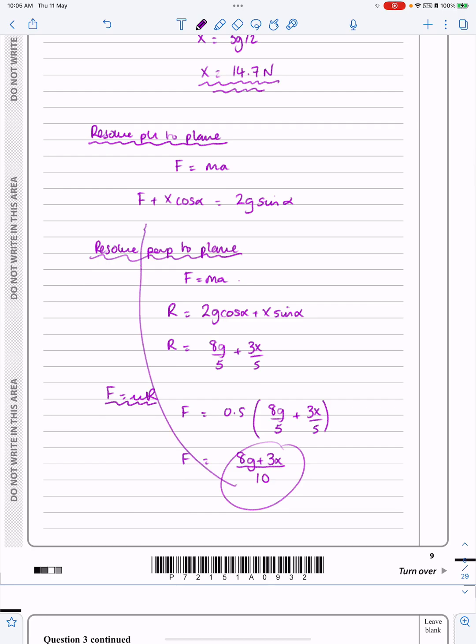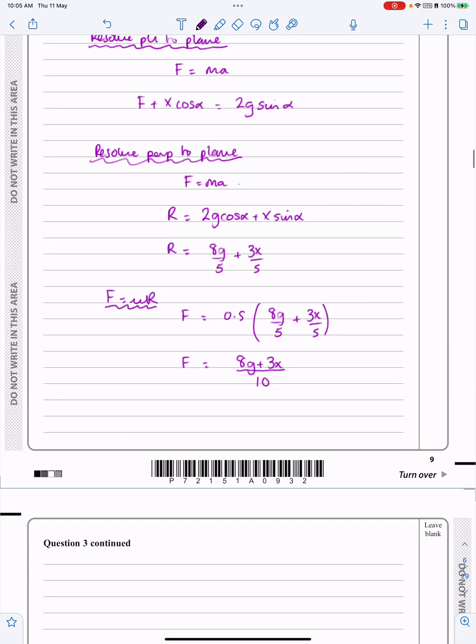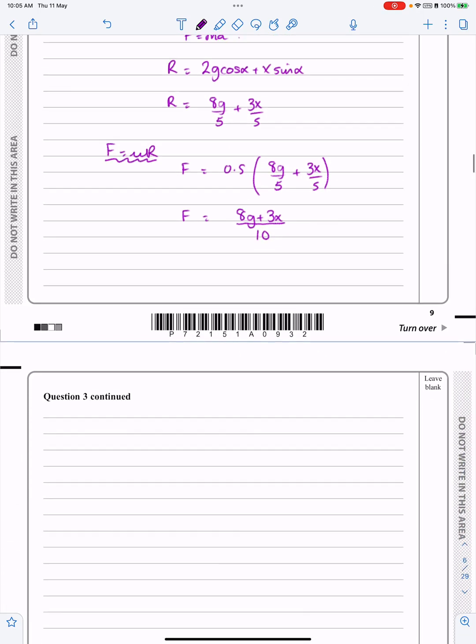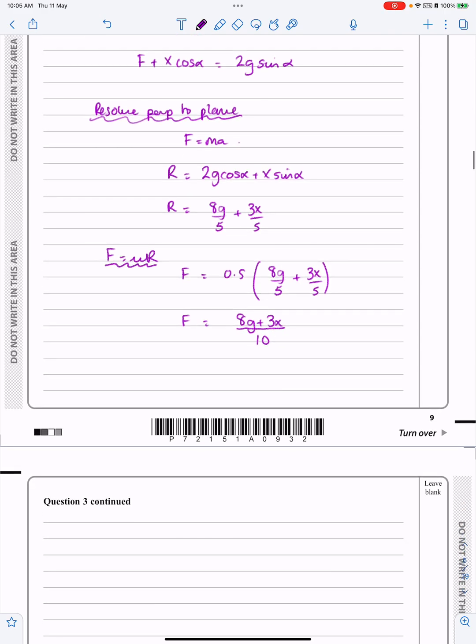This thing now can go in there, and we should be able to get whatever we need from that. I've got F plus X cos alpha, so that's going to be 8g plus 3X all over 10 plus X cos alpha.